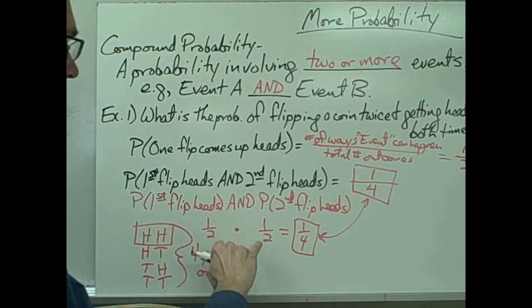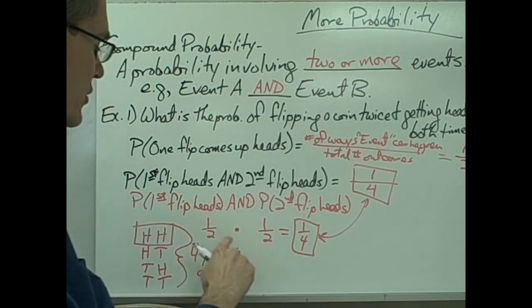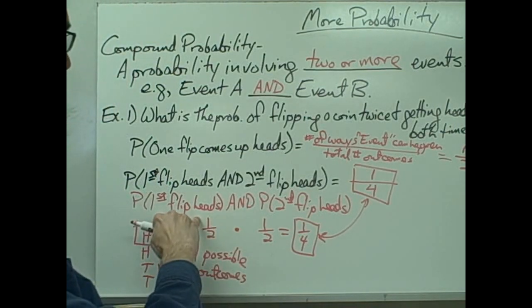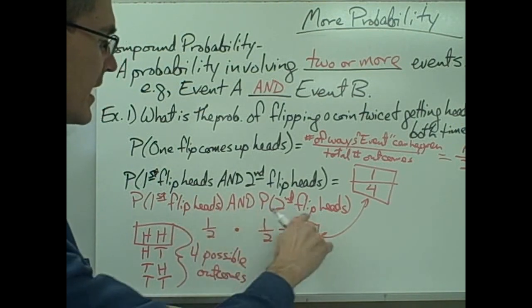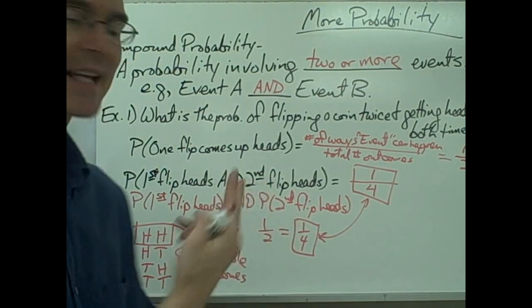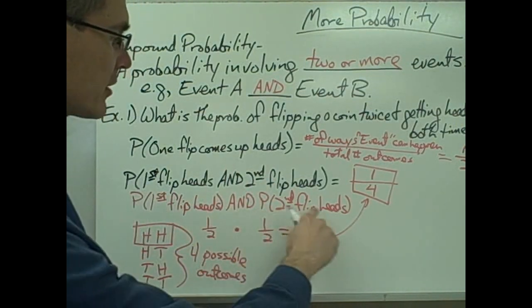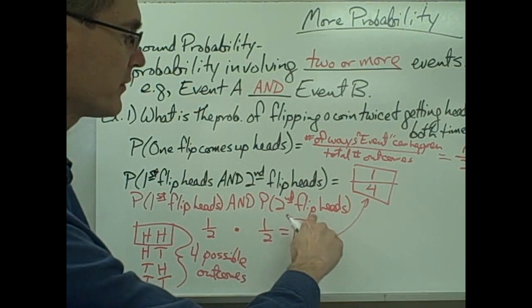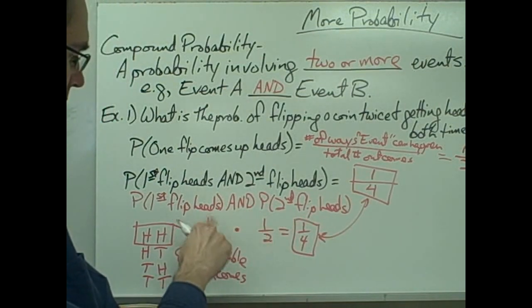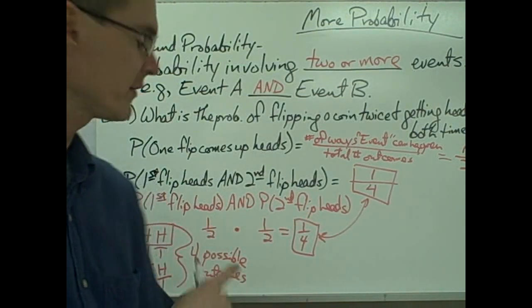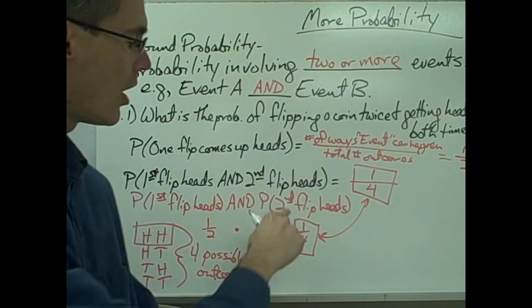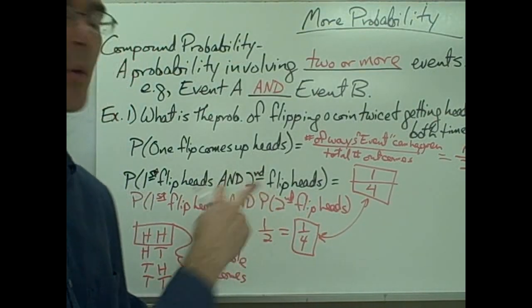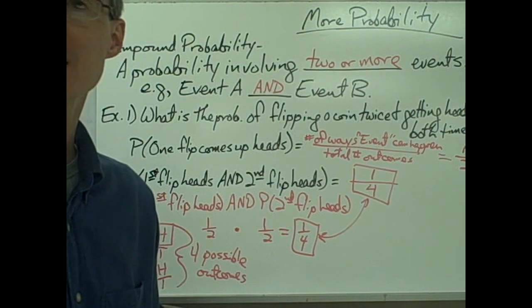It's important to note that when using the multiplication rule here, both events — the first coin flip and the second coin flip — have no effect on each other. Whatever I get on the first flip has no impact at all on the second flip. That's what we call independent events.